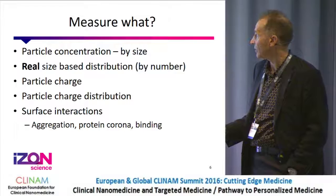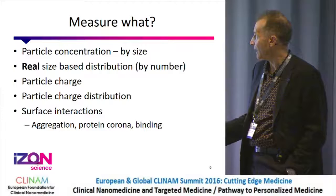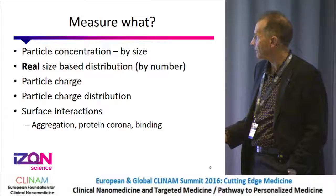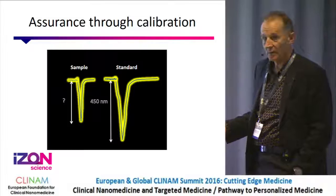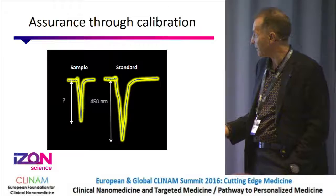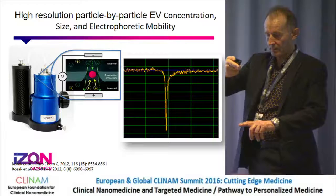What do you measure for nanomedicine? The particle concentration needs to be by size, not just a number. The real size distribution. Particle charge — and now it's relatively easy to get particle charge distribution — and then you can use that to understand surface interactions, somewhat similar to the last couple of speakers. Everything needs to be calibrated so every measurement is compared with a standard.